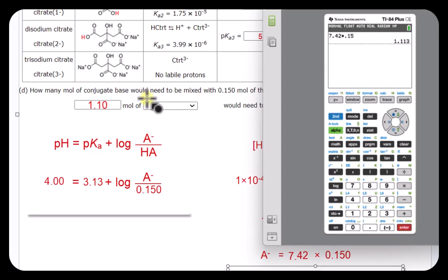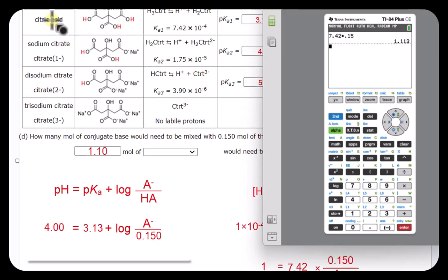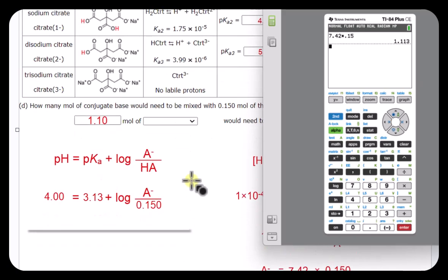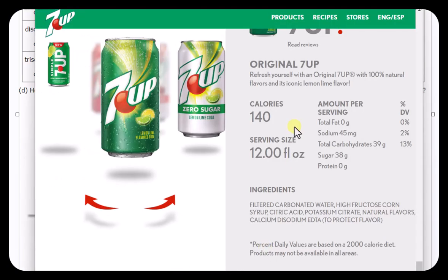Ah, we did. 1.11 moles of, and of course, this is going to be the conjugate base, which is the original sodium citrate. When you do your buffer problems, you have to have the acid and then the base associated with this. So now you know how you can make some 7-Up.